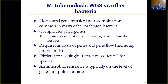Why is Mycobacterium tuberculosis somewhat easier to analyze than some other bacteria? As mentioned, there is no horizontal gene transfer and recombination, which is common in many other pathogenic bacteria. That would complicate bacterial phylogenies, requiring identification and masking of recombination hotspots. When bacteria are swapping genes and plasmids, you have to analyze not just the phylogeny but also the horizontal flow of genes — Klebsiella pneumoniae, for example, is very susceptible to swapping antibiotic resistance plasmids.